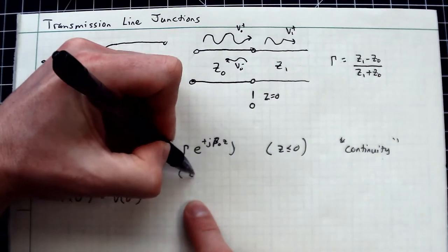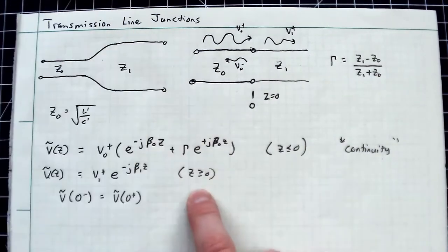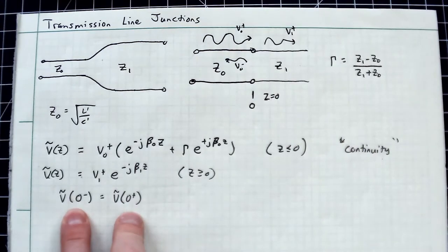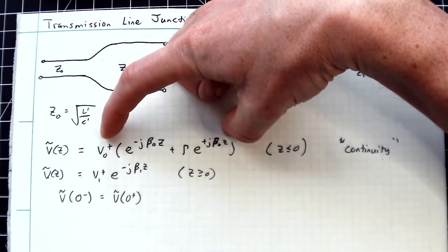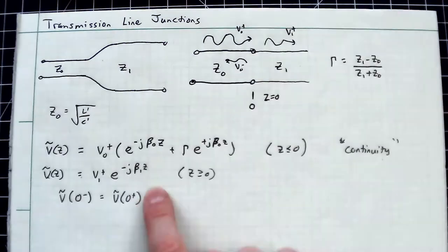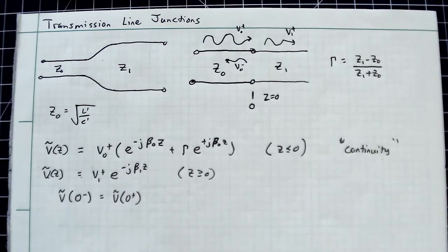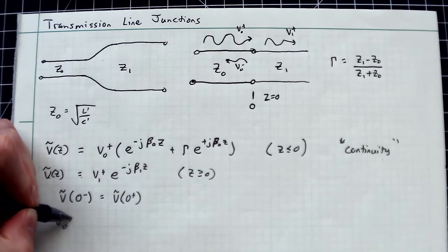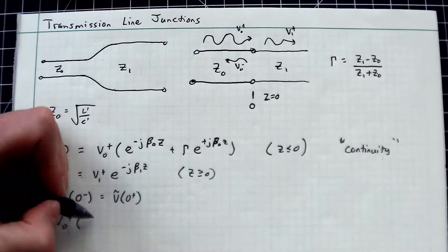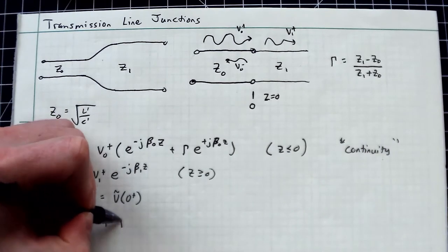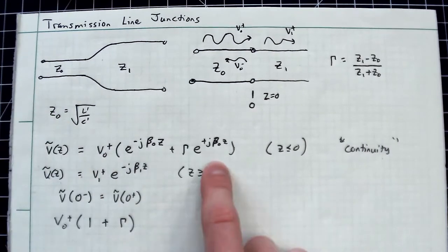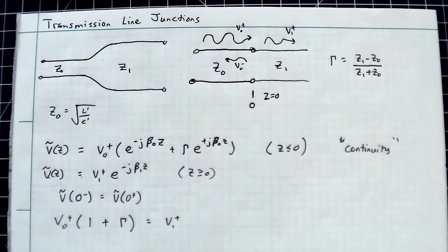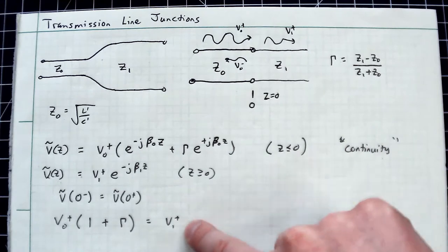You write that as V(0⁻) equals V(0⁺). This is the continuity condition, which says the signal just to the left evaluated at 0 must equal the one to the right evaluated at 0. You'll get V₀⁺ times (1 + γ) equals V₁⁺. That's the continuity condition.